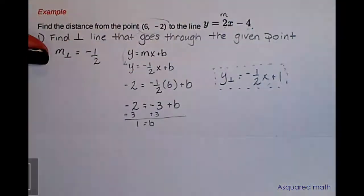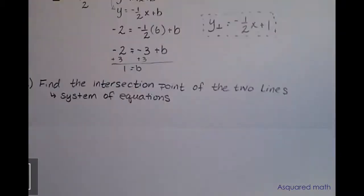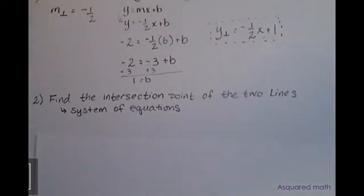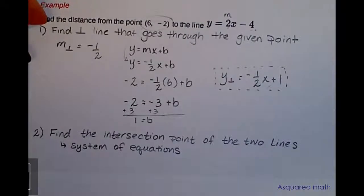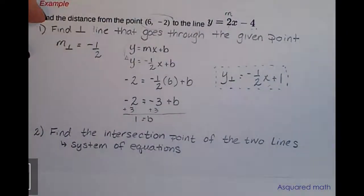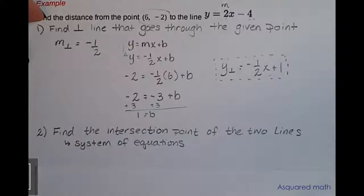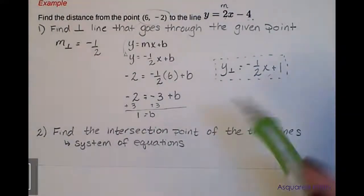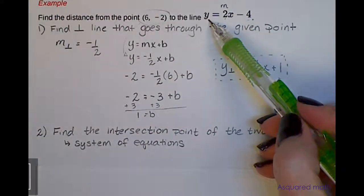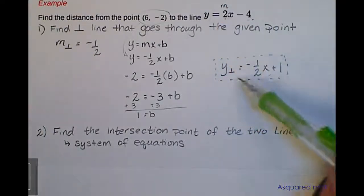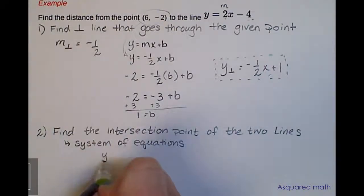So let's work with or figure out where these lines intersect, and that, if you recall, is a system of equations. We have y = 2x - 4 and y = -1/2 x + 1.